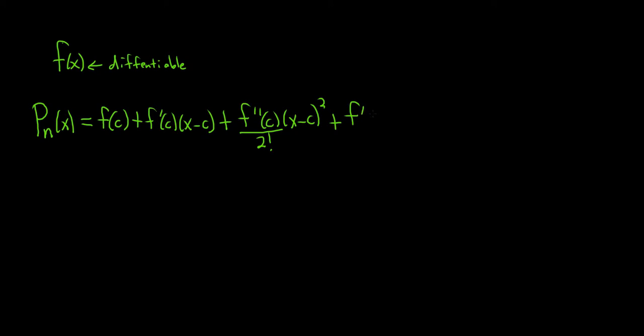And then f triple prime of c. You see the pattern, second derivative, third derivative. The next one, if you guess it, it's going to be a 3, and then here you get 3 factorial, plus dot dot dot. It goes all the way to the nth derivative. So I'm going to use parentheses here to indicate it's a derivative over n factorial. And then this is x minus c to the n.